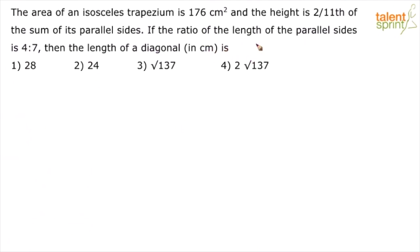So if the ratio of the length of these two parallel sides is 4 is to 7, then what is the length of the diagonal? Now, what do you mean by an isosceles trapezium?